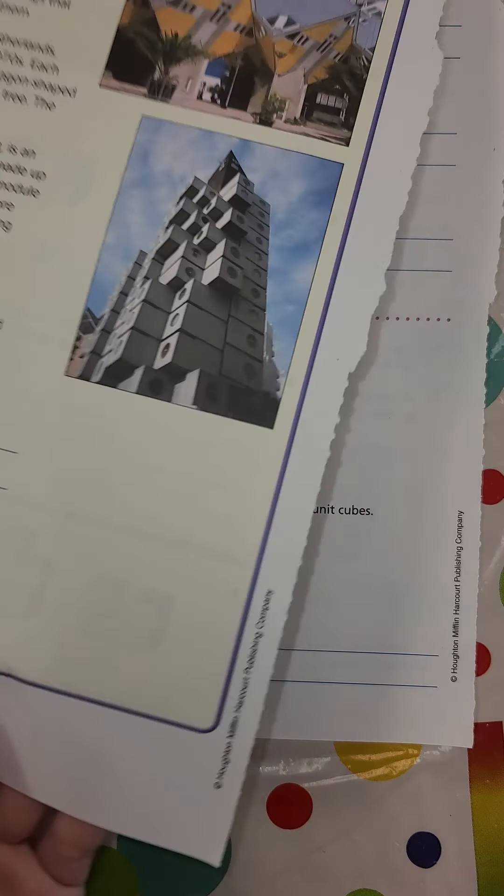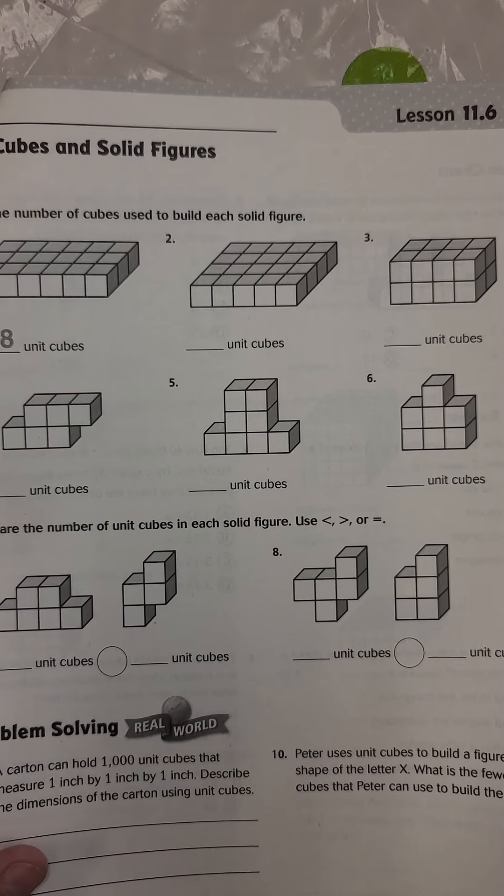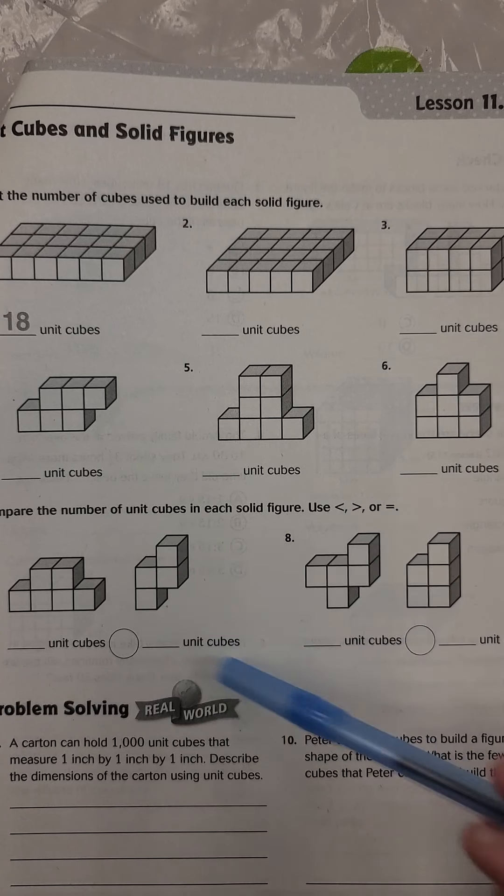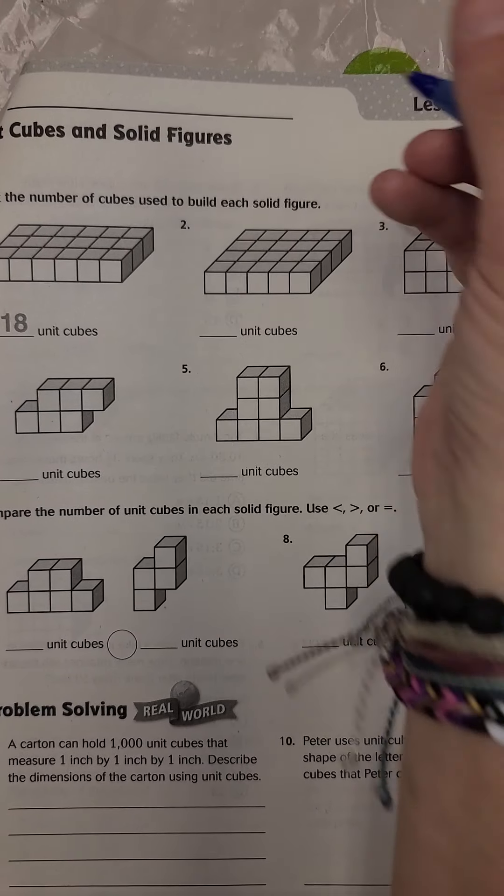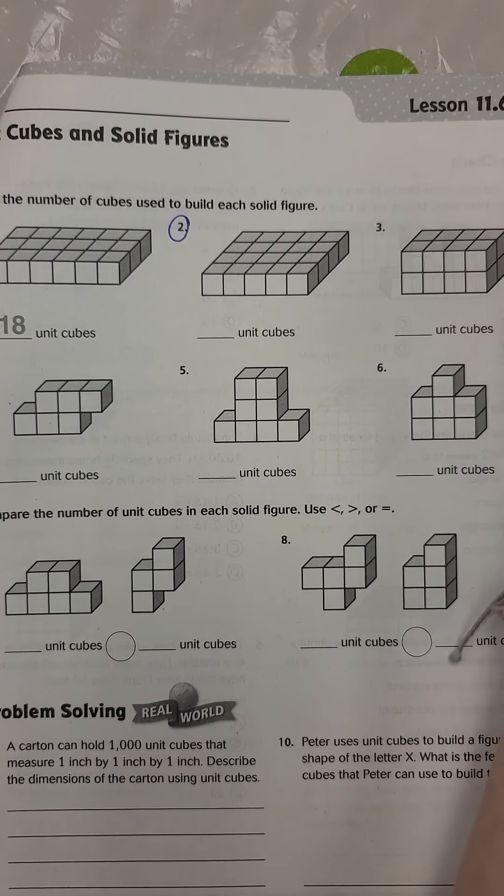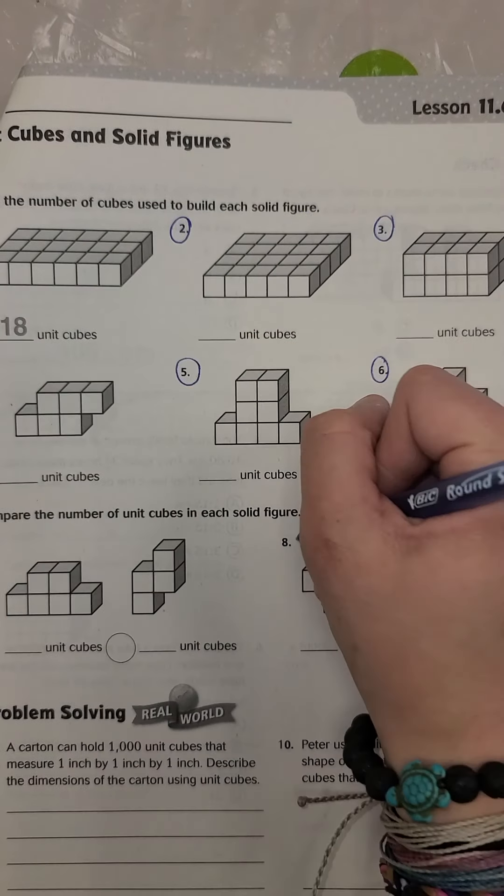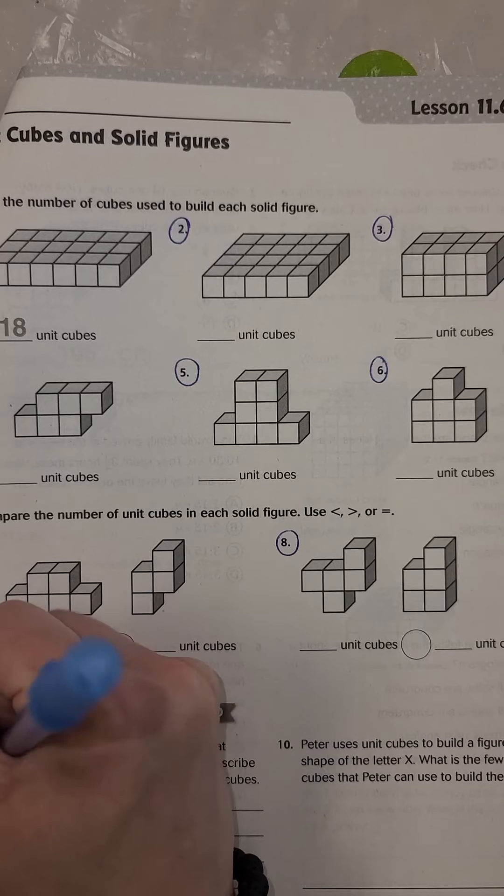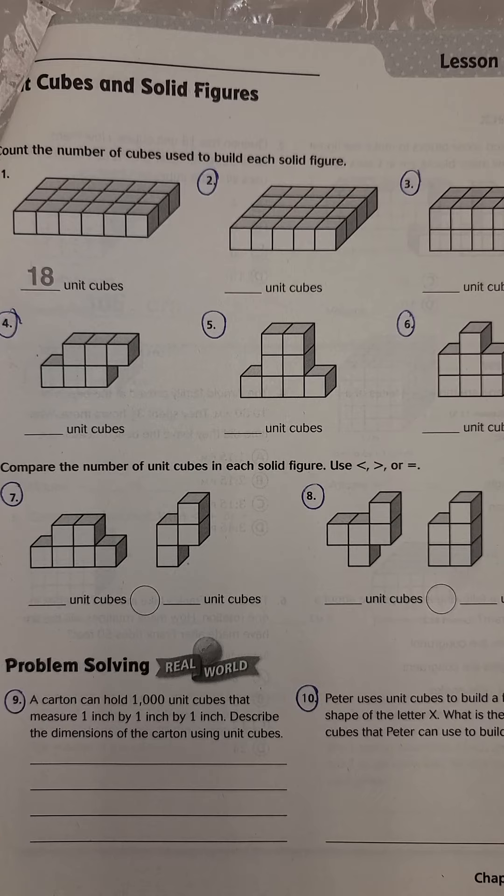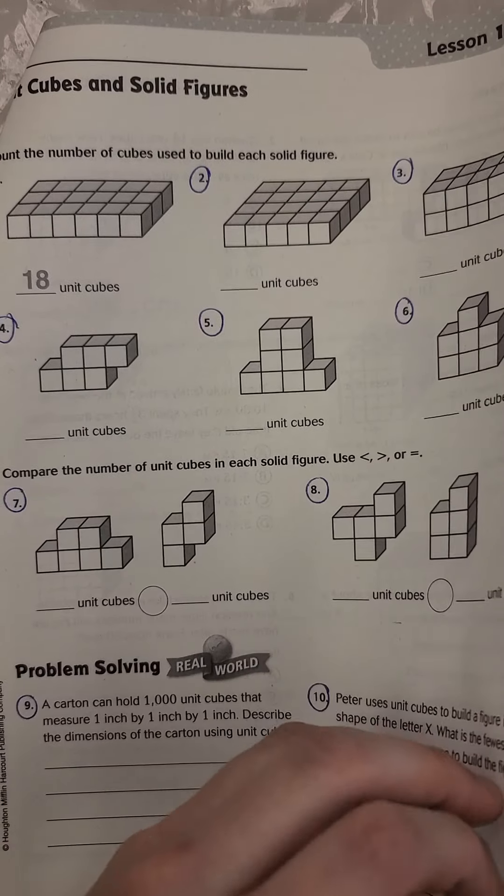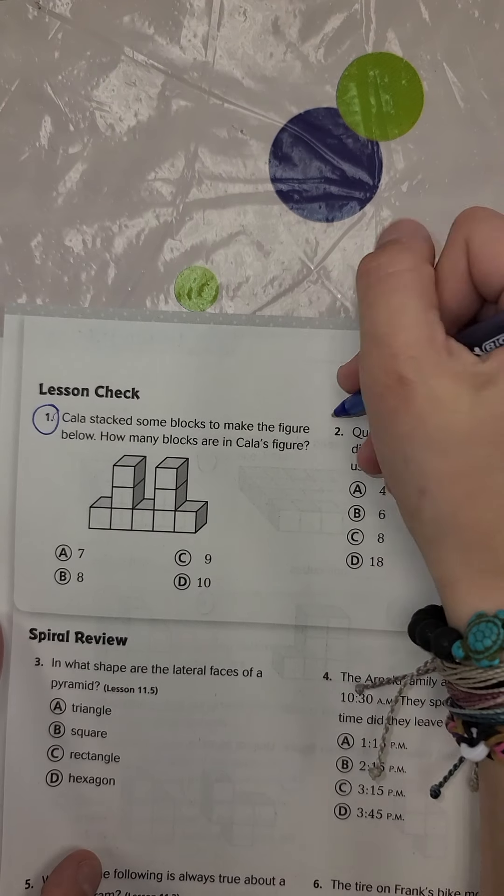All right. So we did all of the ones on the lesson together. That's why I wanted you to pull out your homework. Okay. So this is actually what you're going to be doing for homework. Okay. So we're going to do two, this is actually your lesson check, three, four, five, six, seven, eight, nine, ten. So do nine and ten at the bottom. And then flip to the back of that page. You're going to do one and two at the top. One and two. Okay.